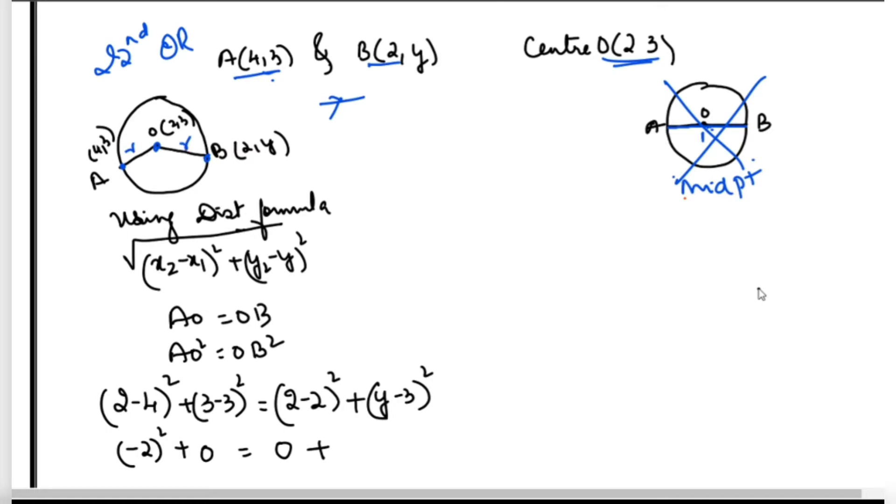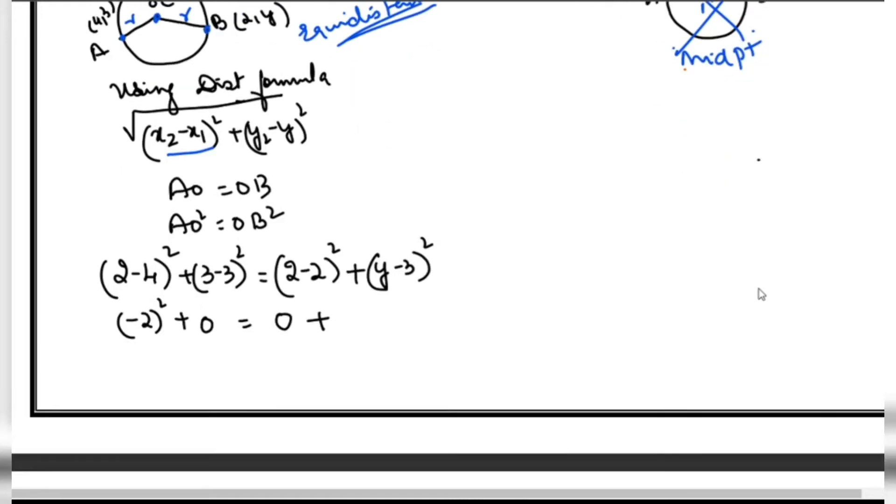If they are on the circle, that means AO equals OB using distance formula. This is equidistance. If you see equidistance, use distance formula directly. By using distance formula, AO equals OB, so AO squared equals OB squared. Formula is (x2-x1)² + (y2-y1)². This square root we don't want, so we square both sides. We get (2-4)² + (3-3)² equals (2-2)² + (3-y)².